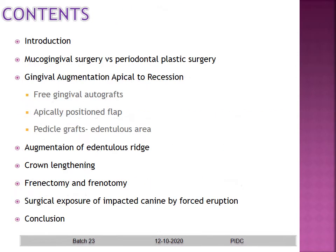The contents include introduction, Mucogingival Surgery and Periodontal Plastic Surgery — what is the difference? Gingival augmentation apical to the recession area: we will be discussing free gingival autografts, apically positioned flap, and pedicle grafts in the edentulous area. Then augmentation in the edentulous ridge, crown lengthening, frenectomy and frenotomy, surgical exposure of impacted canine by forced eruption, and then conclusion.